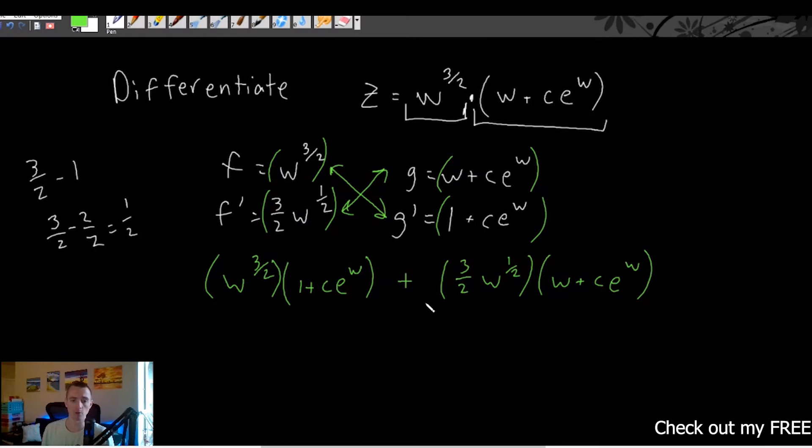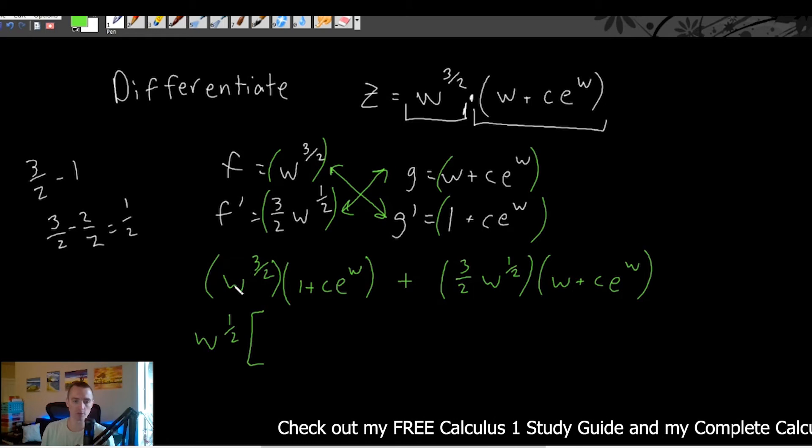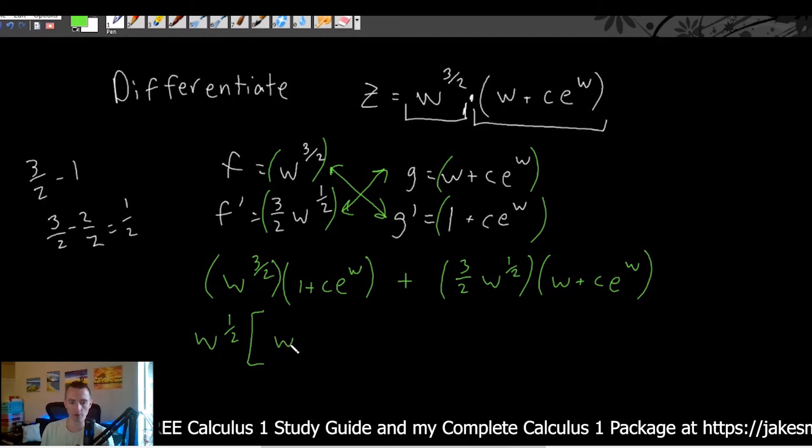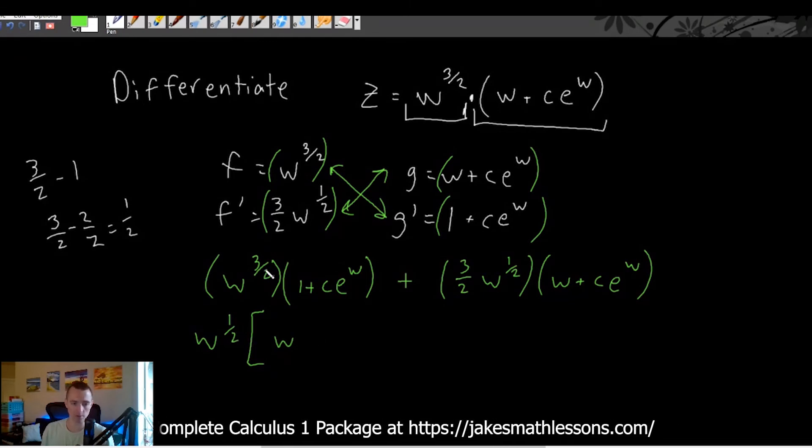But what we can do is both of these have a w to the one half in common. So we could actually factor out w to the one half from this. If we took a w to the one half out of this term, we would be left with just w. Because if you have two things with the same base multiplying together, you would just add their powers. One half plus one is three halves.